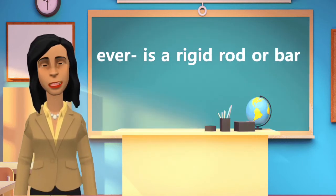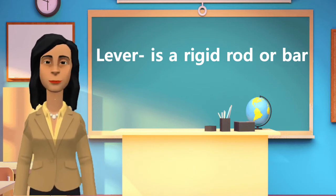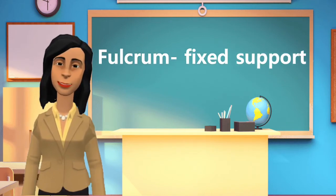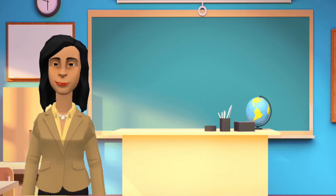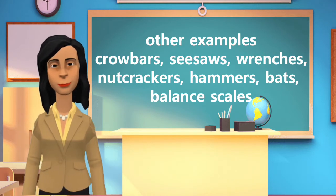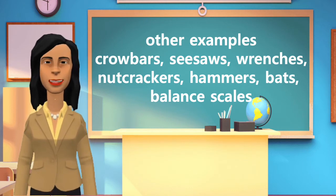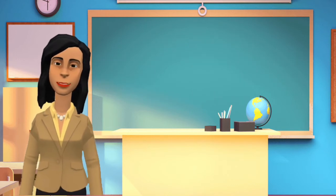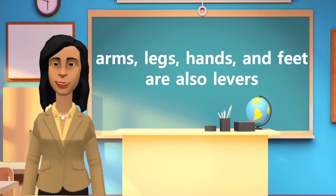A lever is a rigid rod or bar to which a force may be applied to overcome a resistance. It is free to turn about a fixed support called the fulcrum. It is a simple machine used to either gain force or speed, or change direction. Crowbars, seesaws, wrenches, wheelbarrows, nutcrackers, hammers, bats, balance scales, and thousands of other things that are commonly used are levers or combinations of levers. Some parts of the body, such as the arms, legs, hands, and feet, are also levers.